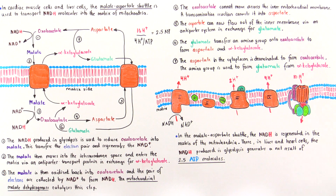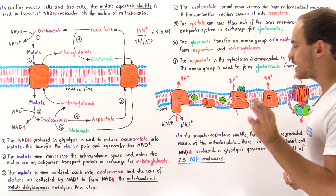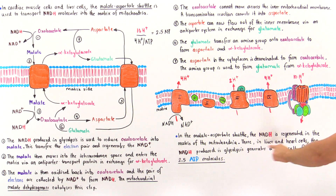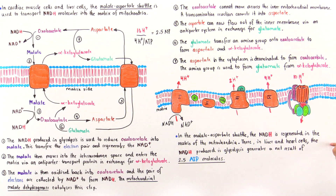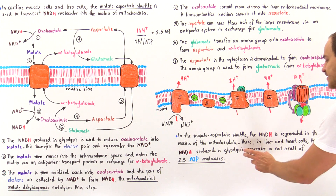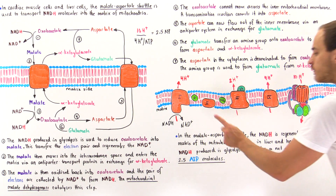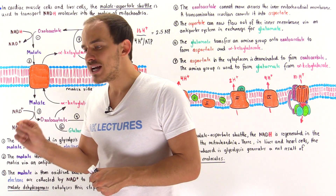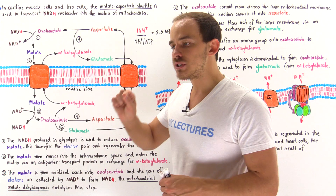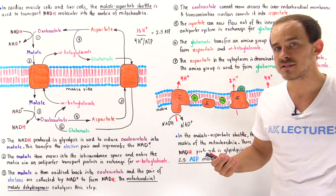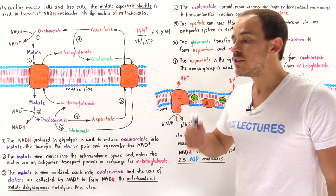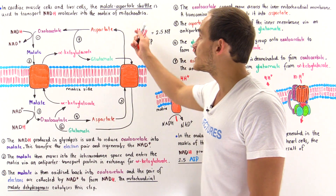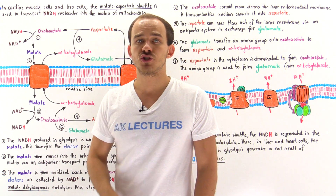In the malate-aspartate shuttle system, NADH is regenerated in the matrix of the mitochondria. Therefore, in liver and heart cells, the NADH produced in glycolysis generates a net result of 2.5 ATP molecules. This contrasts with NADH produced in glycolysis in skeletal muscle cells, which use the glycerol-3-phosphate shuttle system instead of the malate-aspartate shuttle system.